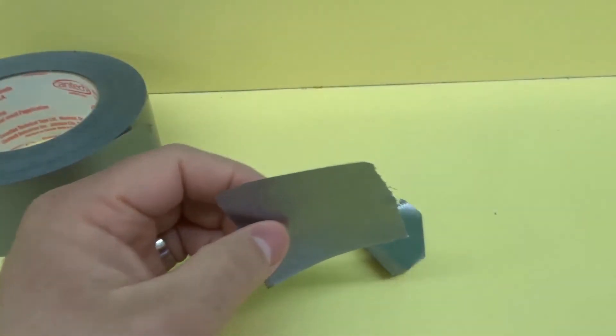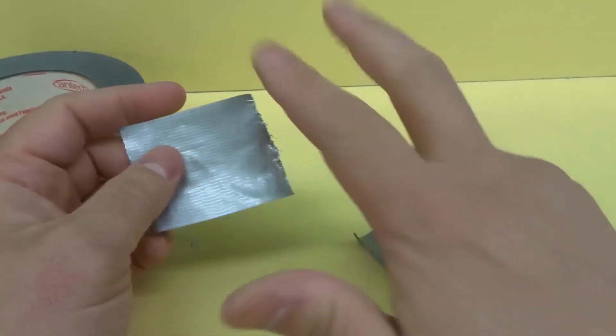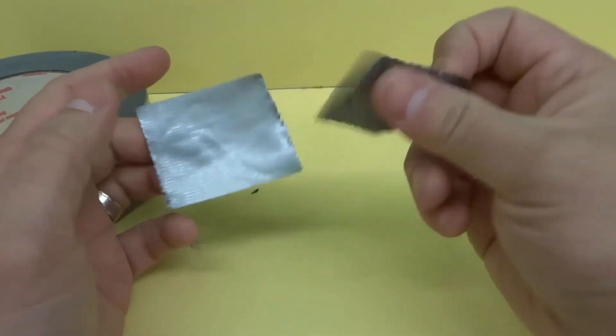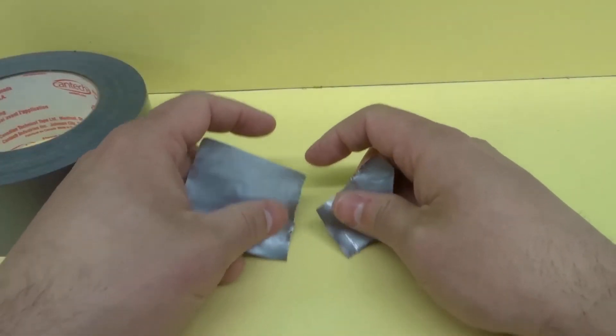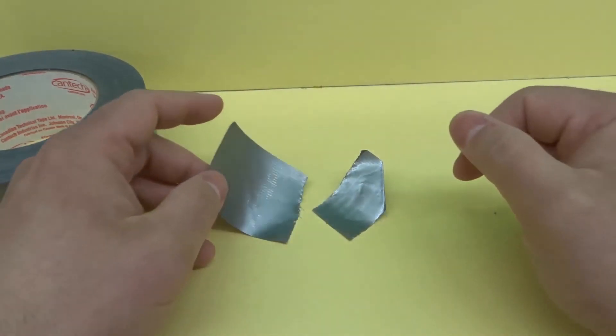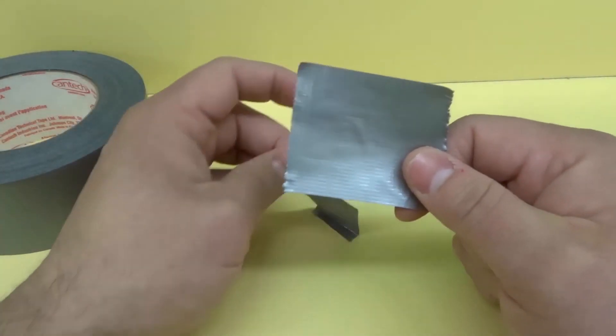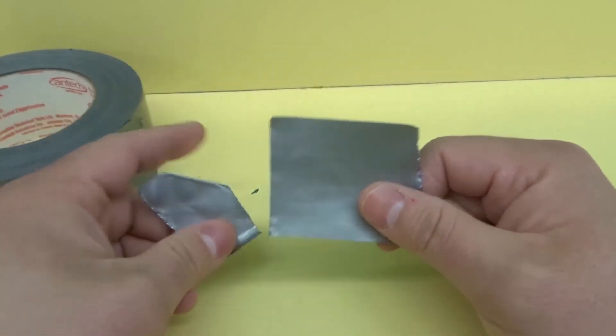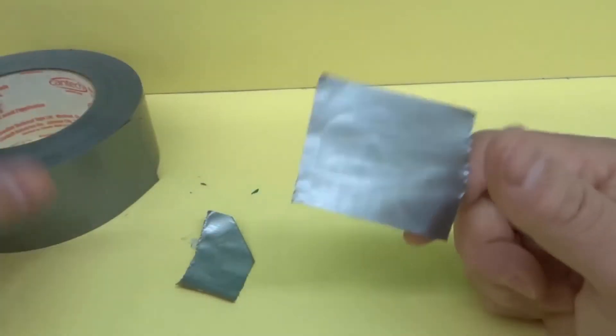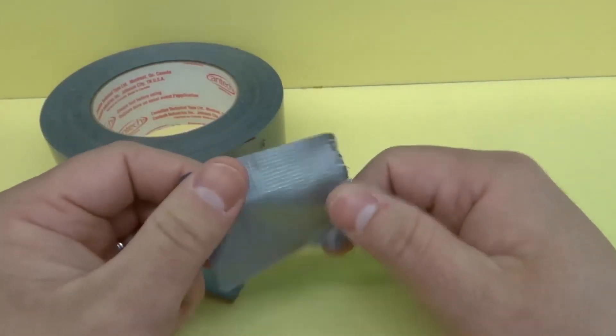So that's essentially why duct tape is so strong. I've gone over the three main components and that's the main reason. When you combine those three components together they allow it to be unbelievably strong and that's it. Like I said I'm not a professional, I just did a whole bunch of research and that's the most simplistic way that I can sum it up as to why it is so strong.